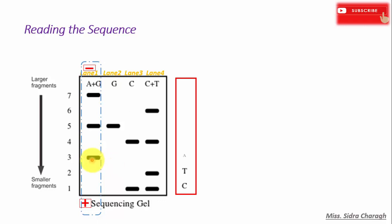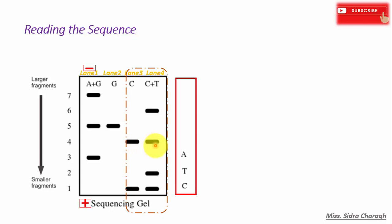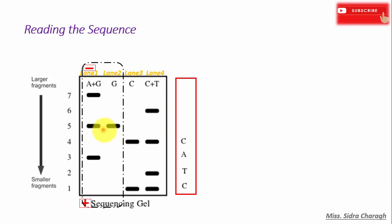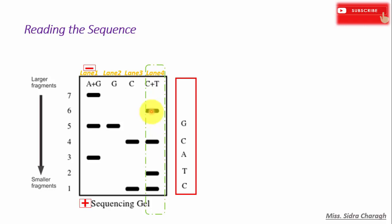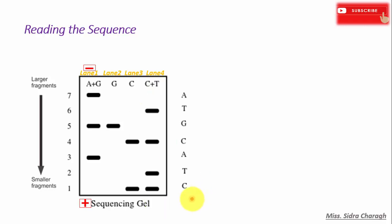Lane 1 has a single band representing A and G, however Lane 2 does not have any band, which indicates G is absent, so the third nucleotide is A. Next, Lane 3 and Lane 4 each have bands — Lane 3 represents C and Lane 4 represents C plus T — so the fourth nucleotide is C. For the fifth nucleotide, Lane 1 and Lane 2, representing A plus G and G, both have bands, so the fifth nucleotide is G. For the sixth nucleotide, there is a single band in Lane 4 representing C plus T but no band in Lane 3 representing C, so the sixth nucleotide is T. Thus, C-T-A-C-G-T is the original sequence.